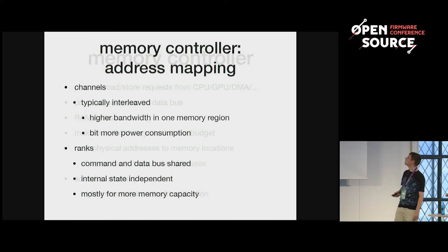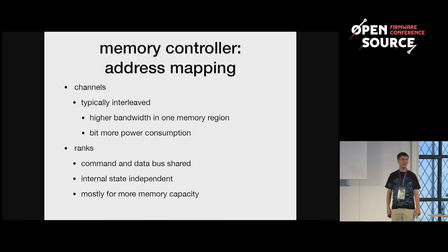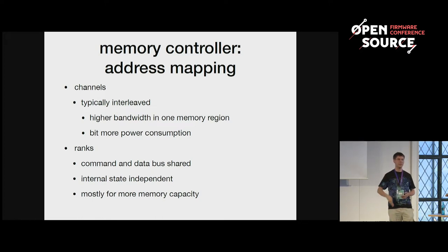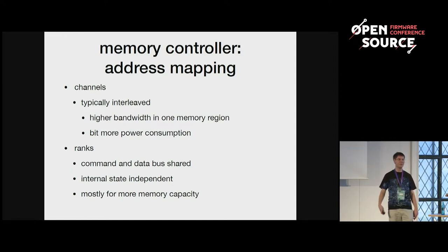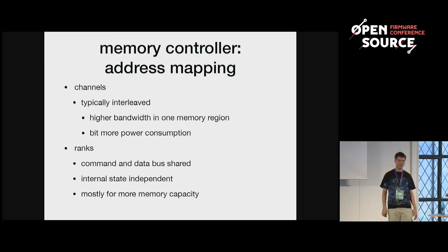The channels are typically mapped interleaved, so when you do a sequential read on a continuous range of memory you can use the sum of the bandwidth of both channels. Using both memory channels basically doubles the dynamic power consumption, but you mostly have more than just one access in different locations, so having the memory interleaved usually increases performance.